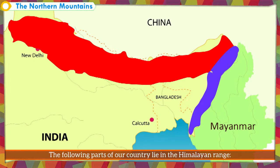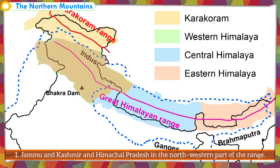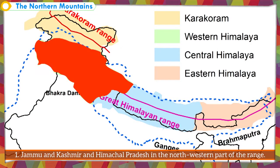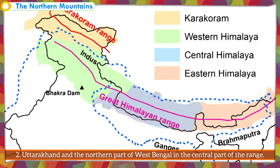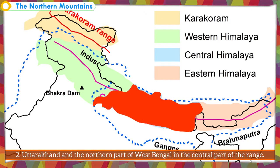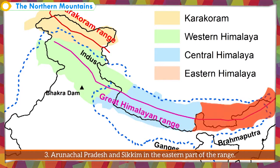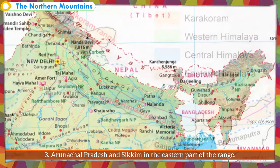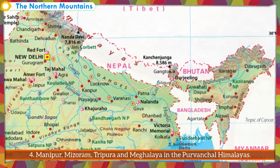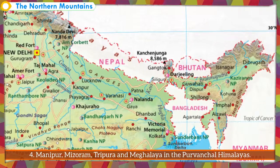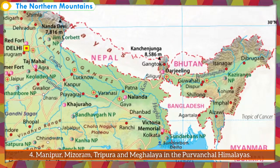These parts of our country lie in the Himalayan range: Jammu and Kashmir and Himachal Pradesh in the northwestern part of the range; Uttarakhand and the northern part of West Bengal in the central part of the range; Arunachal Pradesh and Sikkim in the eastern part of the range; Manipur, Mizoram, Tripura and Meghalaya in the Purwanchal Himalayas.